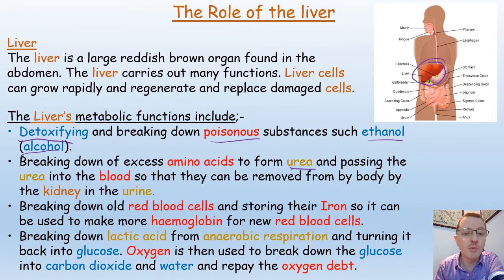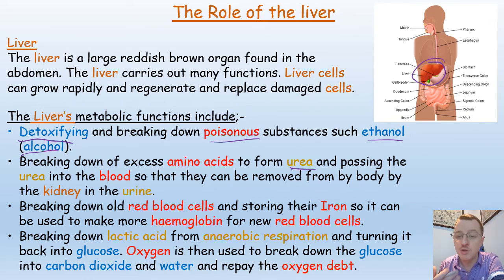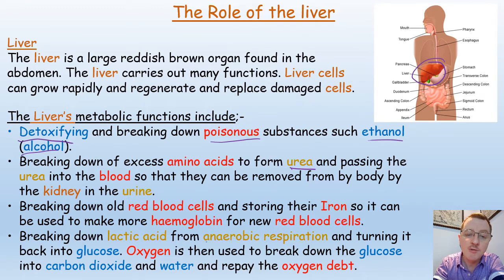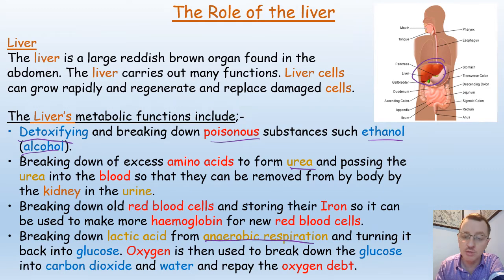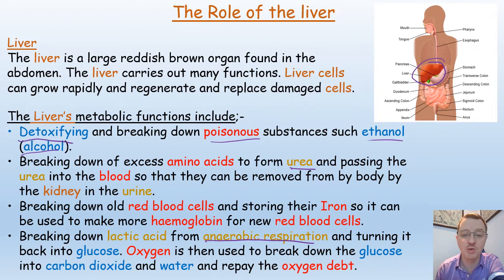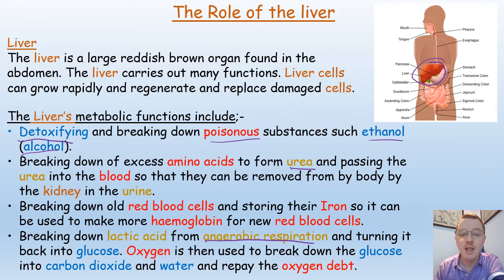The liver will also break down old red blood cells and store their iron, so it can be used to make more haemoglobin for new red blood cells. The liver will also break down lactic acid formed during anaerobic respiration and turn it back into glucose. Oxygen is then used to break down the glucose back into carbon dioxide and water, helping to repay the oxygen debt built up while the cells were forming lactic acid.